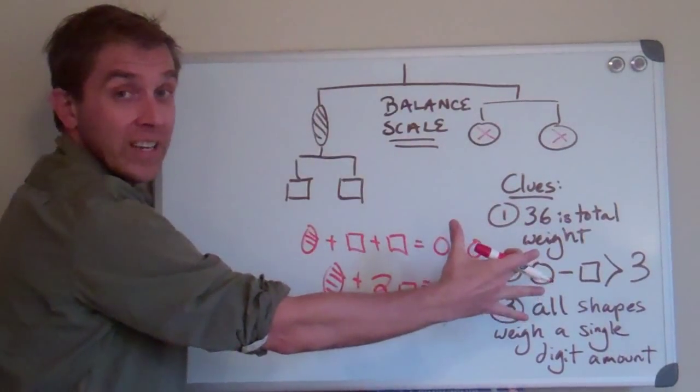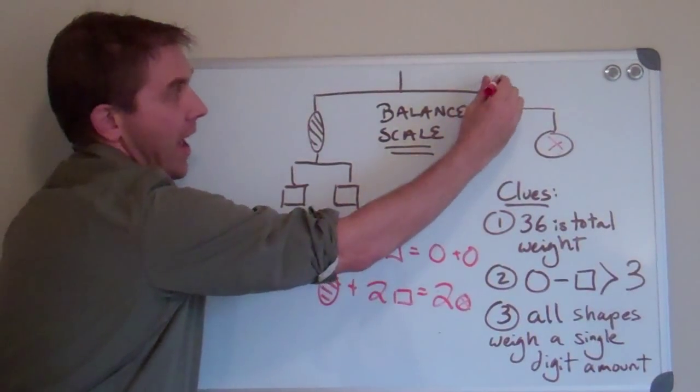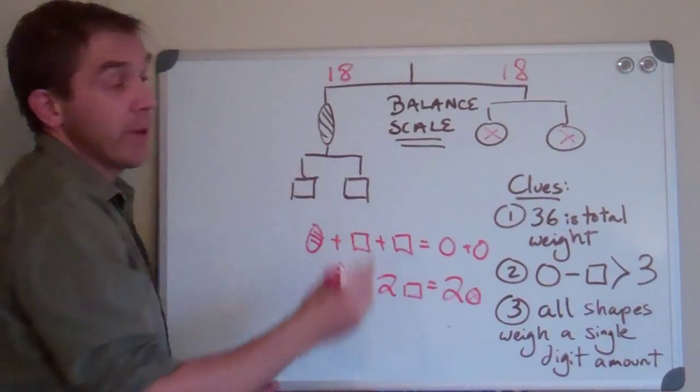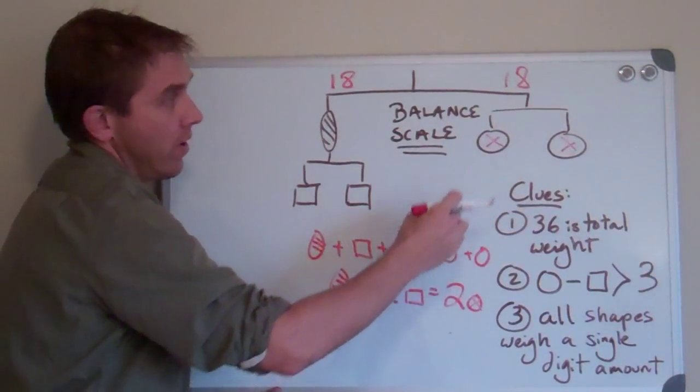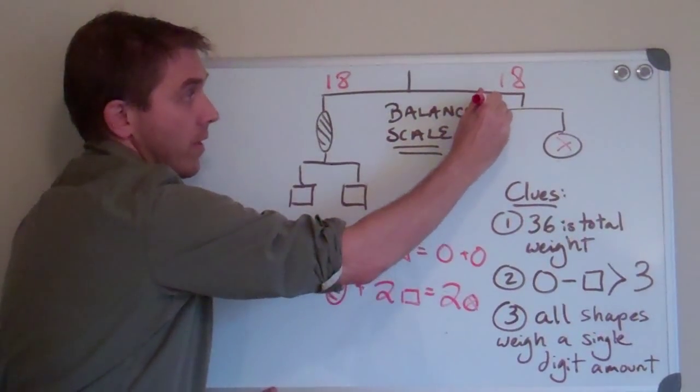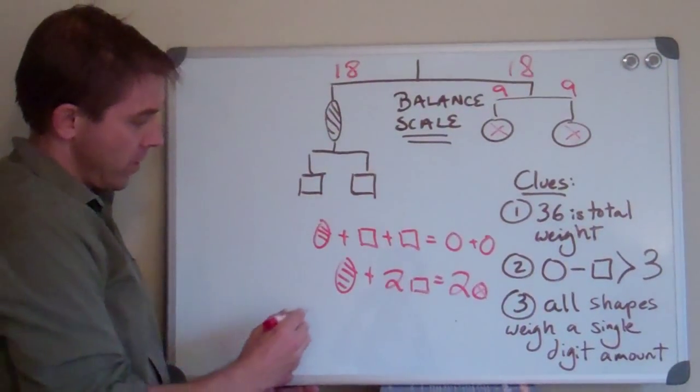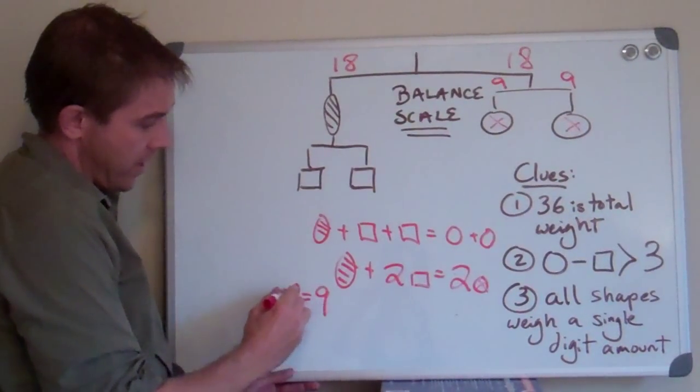Well, if the whole weight is thirty-six, then this side has to be eighteen, and this is how you should really start solving this. This side has to be eighteen, too, because they're equal. This is eighteen, and these are even. This will be nine, and this will be nine. Problem solved. We solved the circle. Write down circle equals nine.